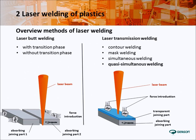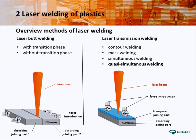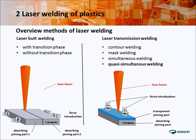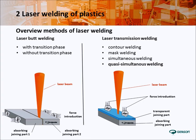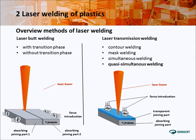The welding of plastics can be divided into two different processes: laser butt welding and laser transmission welding. During laser butt welding, two laser absorbing materials are butt joint welded by applying pressure. The laser energy can be applied together with the force at one time or separately one after another. Because laser butt welding limits the product design significantly, this process is less important for industrial solutions.